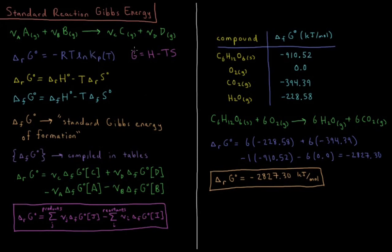We can also note that the Gibbs energy is equal to the enthalpy minus the temperature times the entropy of our system. So the standard Gibbs energy change of reaction equals the standard enthalpy change of the reaction minus temperature times the standard entropy change of our reaction.